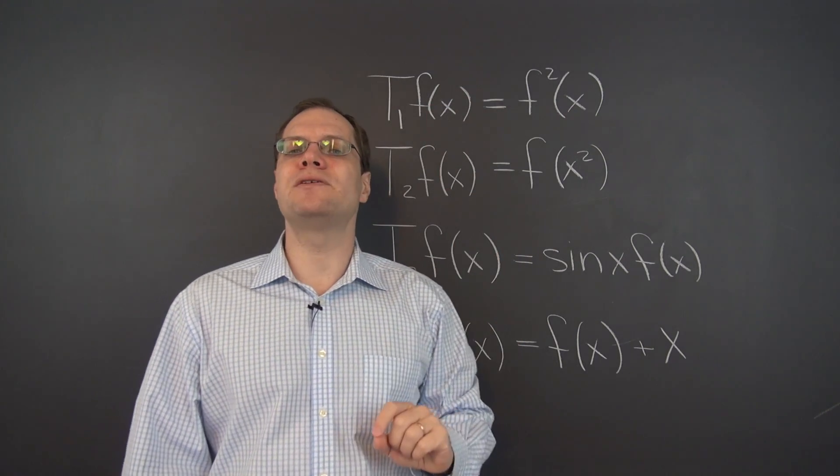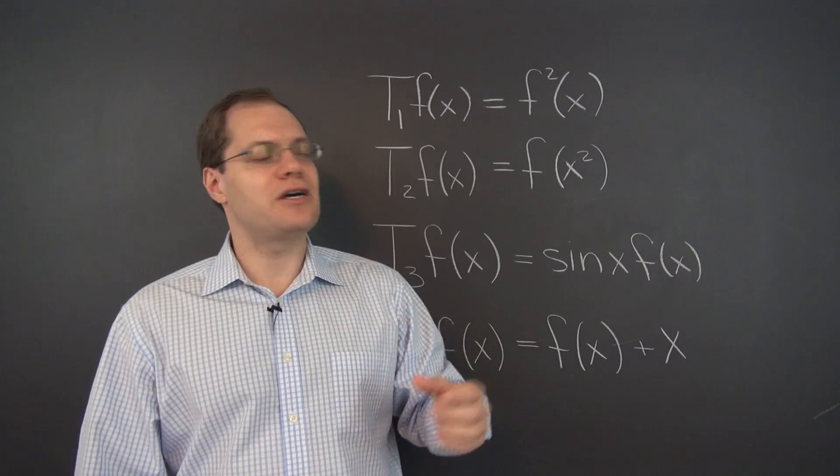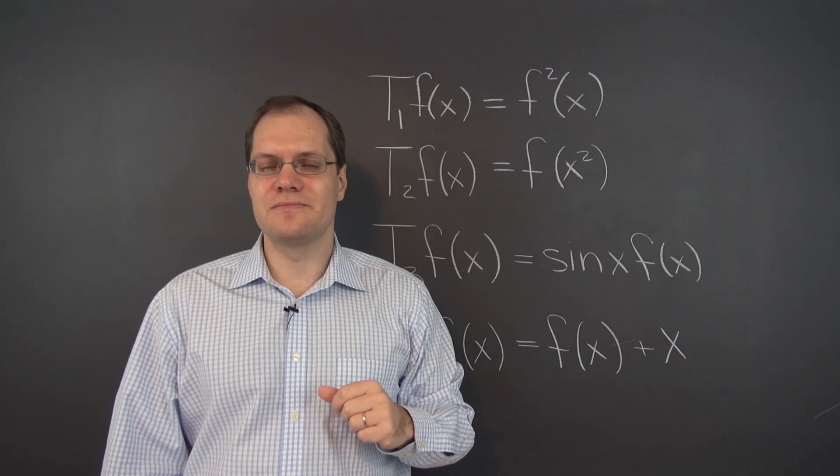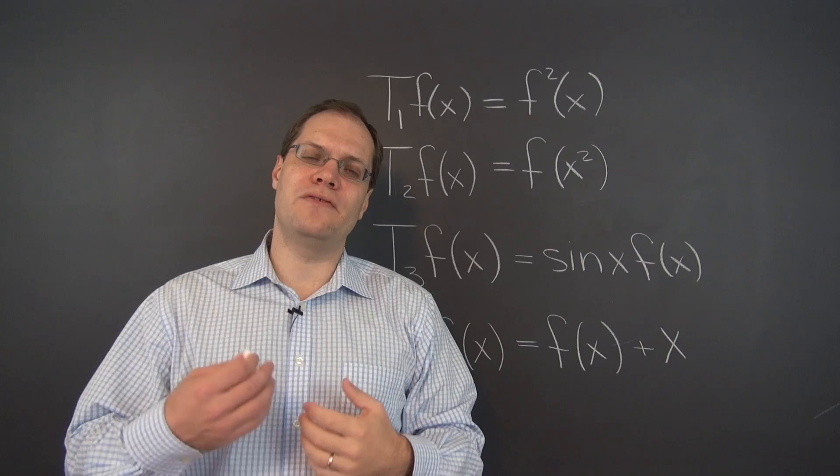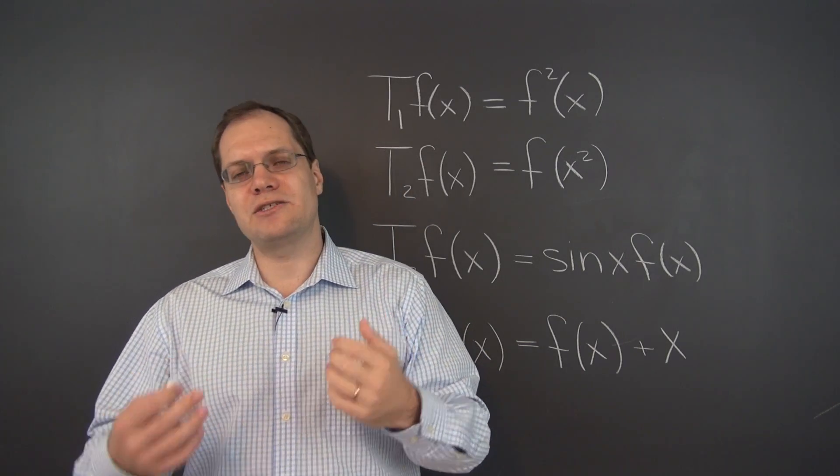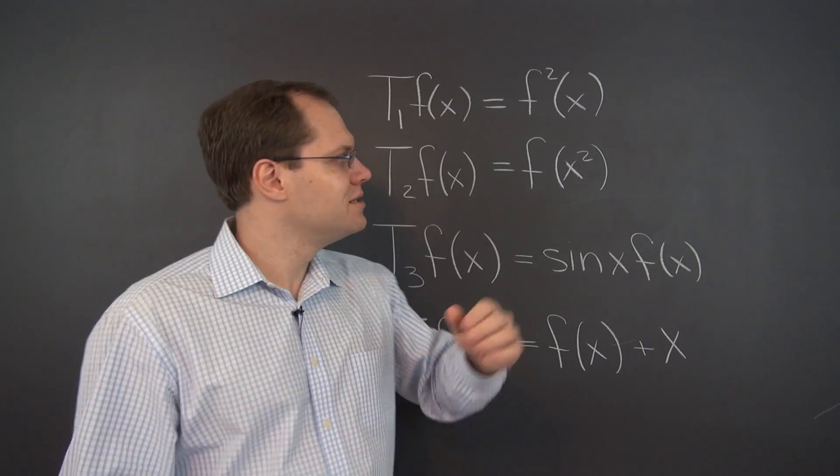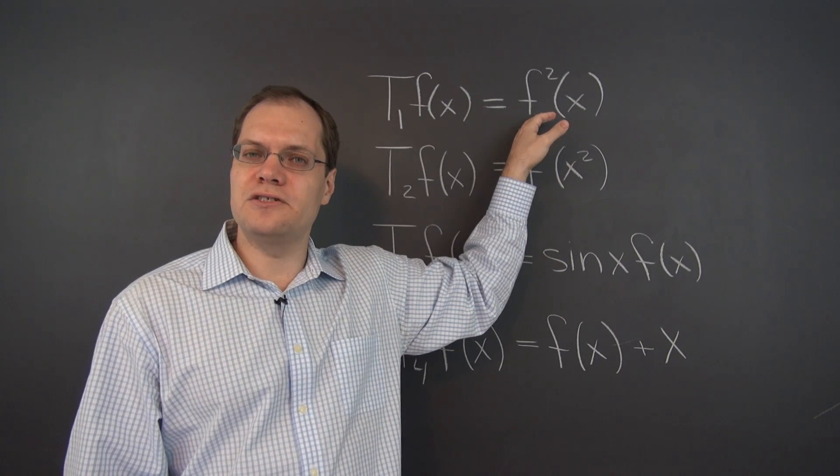And if we do it in the opposite order, transform the function first and then multiply by 5, transforming the function would yield f squared of x and then multiplying it by 5 would be 5f squared of x. So we're comparing 5f squared of x to 25f squared of x and there you go, the results don't match. This is not a linear sort of thing to do with a function.